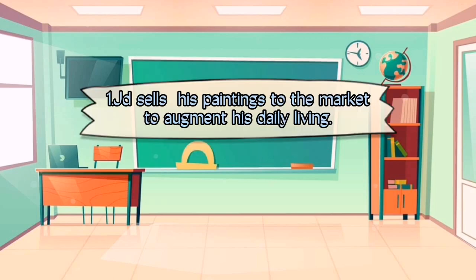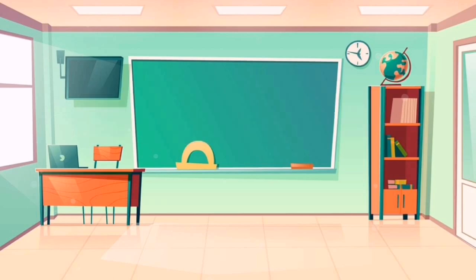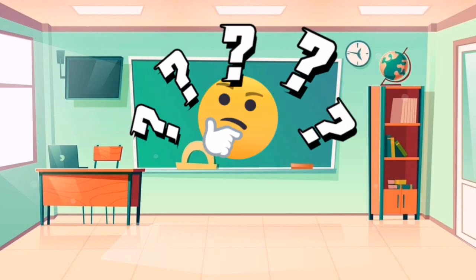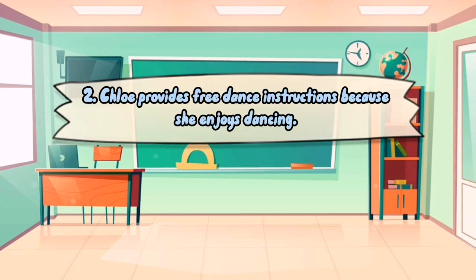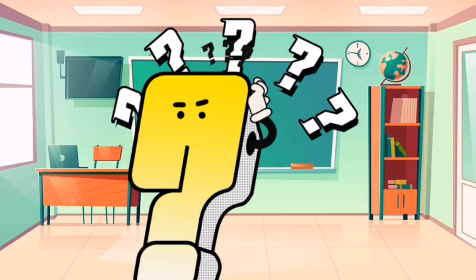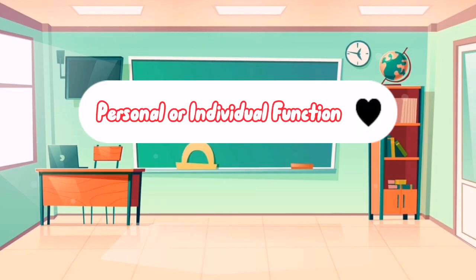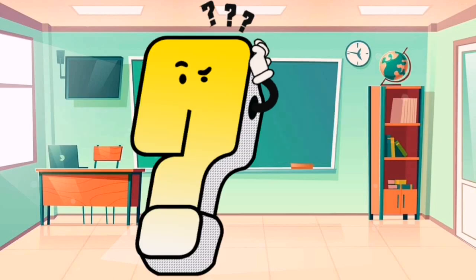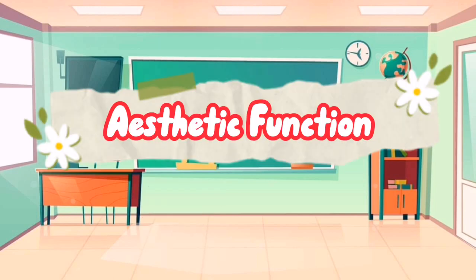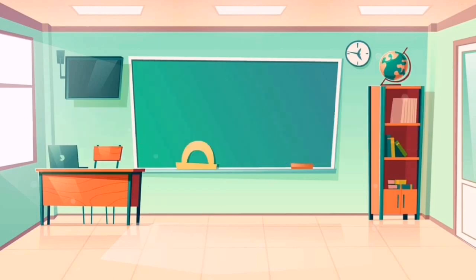Number one: JD sells his painting to the market to augment his daily living. If your answer is economic function, you are correct. Number two: Khloe provides free dance instructions because she enjoys dancing. If your answer is personal or individual function, you are correct. Number three: Kendra's mother put a new curtain in their house. If your answer is aesthetic function, you are correct.